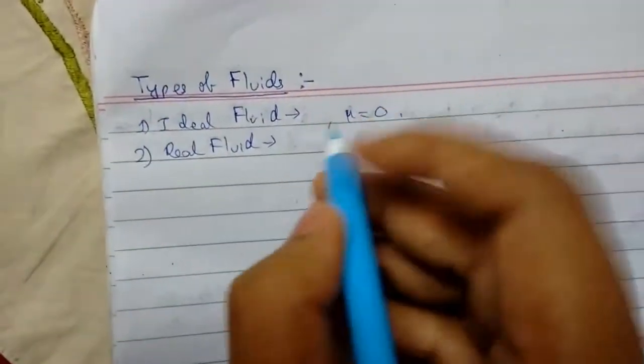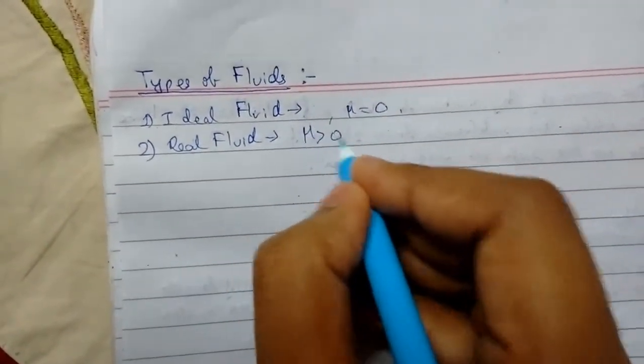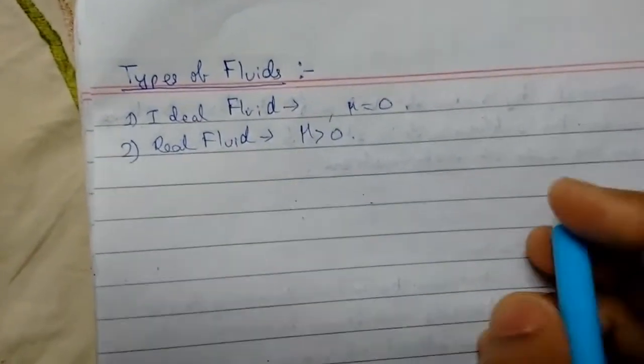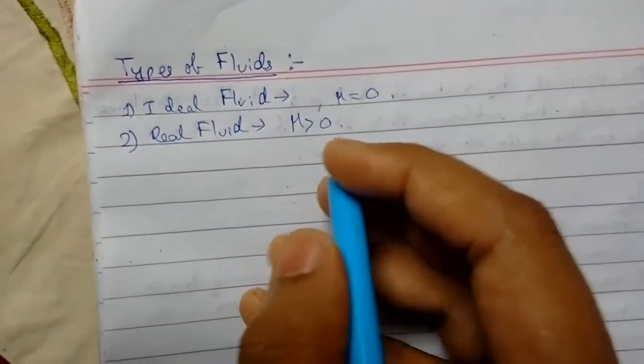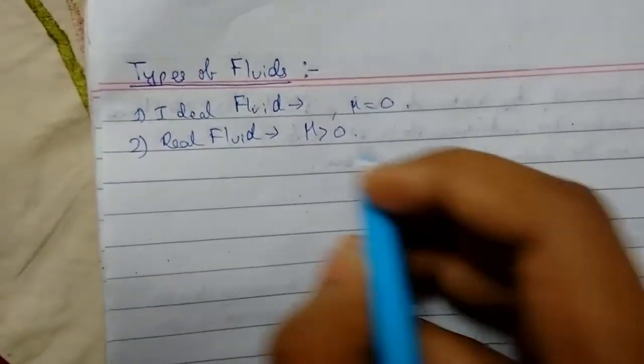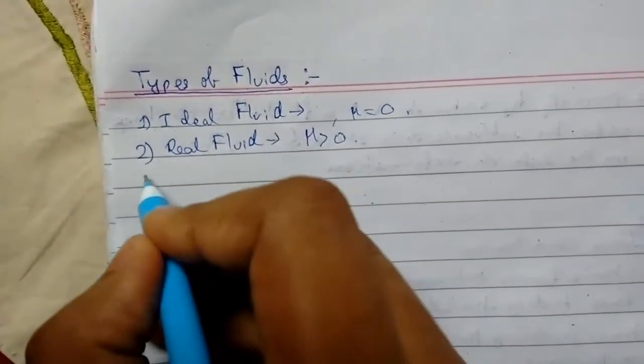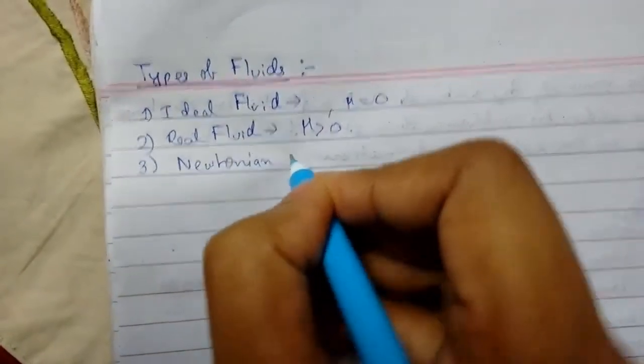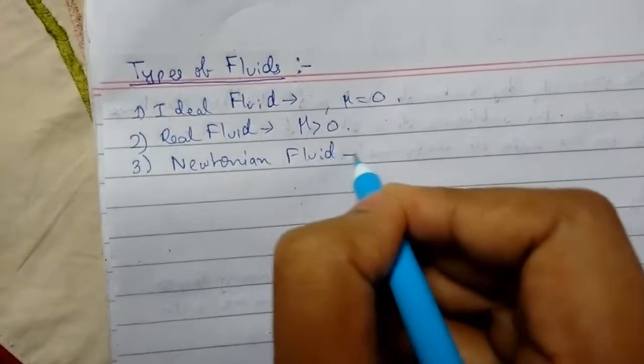Next is real fluid. So all the fluids in reality have viscosity greater than zero. So all the liquids which we are seeing in day to day life are real fluid, and hence they are termed as real fluid, and their motion is known as viscous flow.